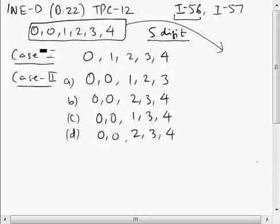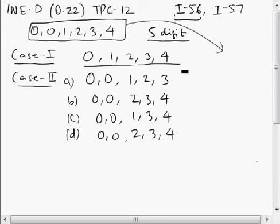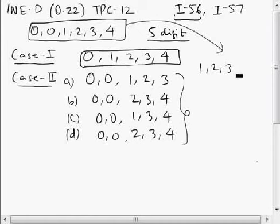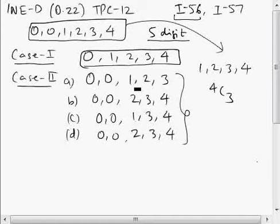In Case 1, we take one zero and four non-zero digits. The sum of five-digit numbers that can be formed with these five digits will be found under Case 1. In Case 2, we take a pair of zeros and then three non-zero digits. Three non-zero digits can be chosen from four non-zero digits in 4C3 ways, so we'll have four sub-cases, since the sum of digits differs for each selection.